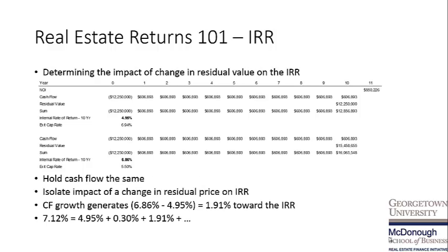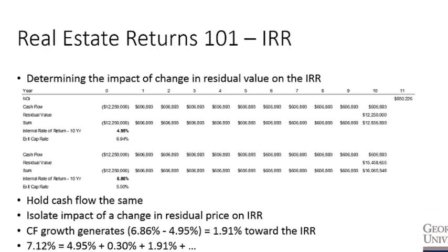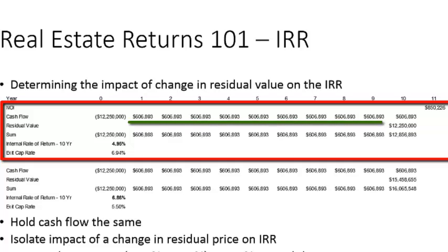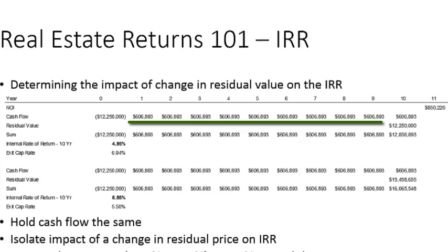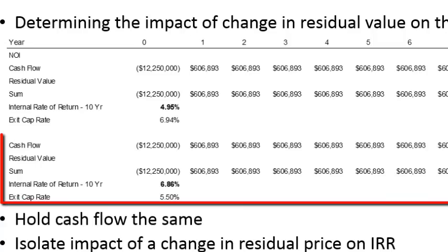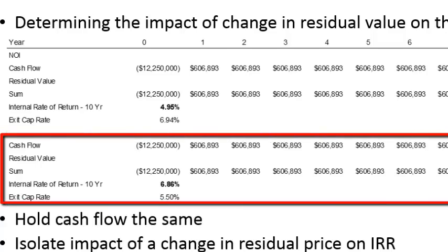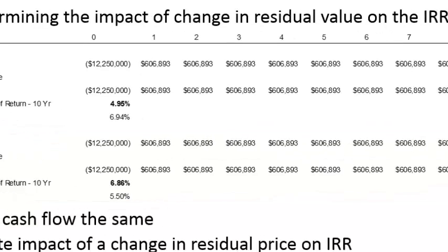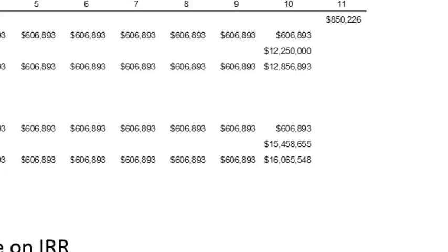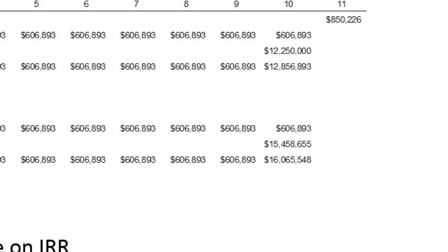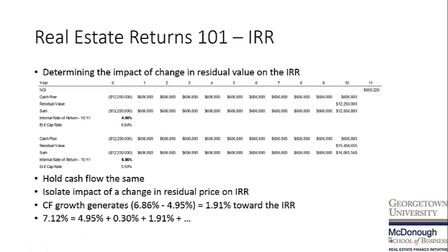We now need to determine the impact of the change in residual value. The top scenario again shows $12.25 million with year one cash flow static and residual value static, resulting in a 4.95% IRR. The bottom scenario acquires the asset for $12.25 million, holds cash flow steady, but fluctuates the residual value based on what we've underwritten in our pro forma — in this case a little under $15.5 million. Subtracting the 6.86% IRR in this analysis from the 4.95% baseline shows that 191 basis points are attributable to the change in residual value.